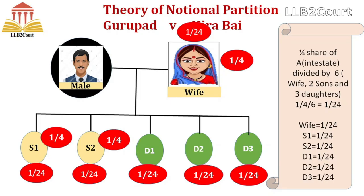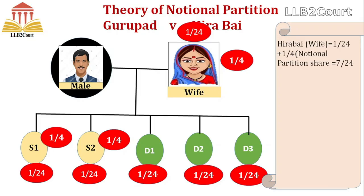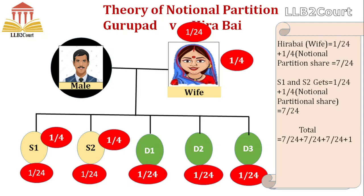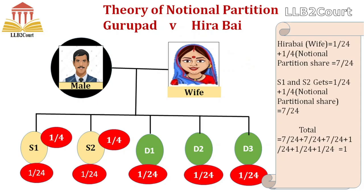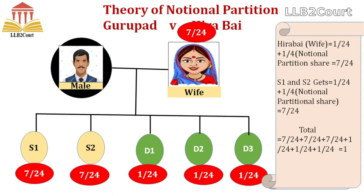In addition to the one-twenty-fourth received from devolution, the wife already holds her notional partition share of one-fourth. So her total share is one-twenty-fourth plus one-fourth, which equals seven-twenty-fourths. Similarly, each son gets his notional partition share of one-fourth plus one-twenty-fourth from devolution, totaling seven-twenty-fourths. Daughters D1, D2, and D3 each receive only one-twenty-fourth. The total of all shares comes to unity, confirming the calculation is correct. This is how the notional partition works.